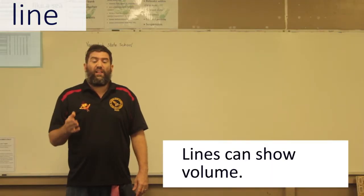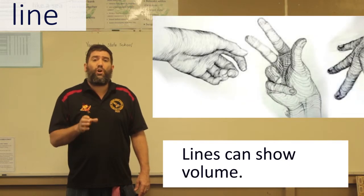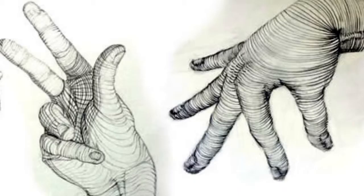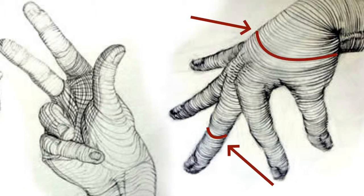Here is where a line is being used or lines being used to show volume. So it's making it seem like it's 3D, those lines going around.